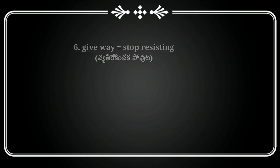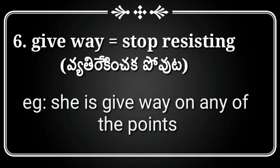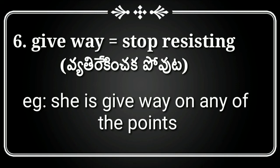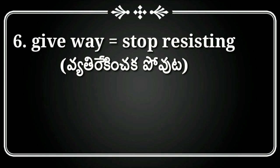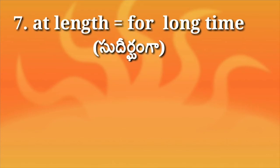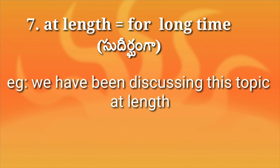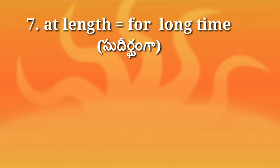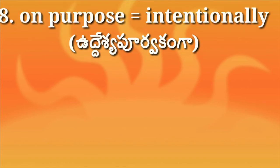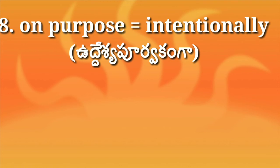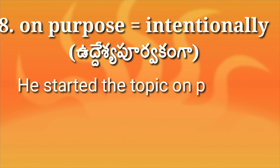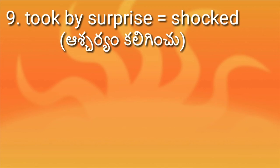Next: 'get rid of,' which means to make free of something. Example: Everyone tries to get rid of bad people. Next: 'give way,' which means to stop resisting. Example: She gave way on some of the points. Next: 'at length,' which means for a long time or in detail. Example: We have been discussing this topic at length. Next, the eighth one: 'on purpose,' which means intentionally. Example: He started the topic on purpose.